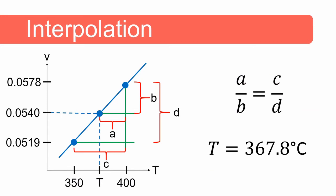We can use the principle of similar triangles to do our interpolation. We assume a straight line between the two known data points. Distance a divided by distance b is equal to distance c divided by distance d. The answer will thus be 400 minus a and we get a final value of 367.8 degrees Celsius where the specific volume of the steam will be 0.054 cubic meters per kilogram. You're welcome to pause this video and see if you get the same answer as me using this interpolation technique.